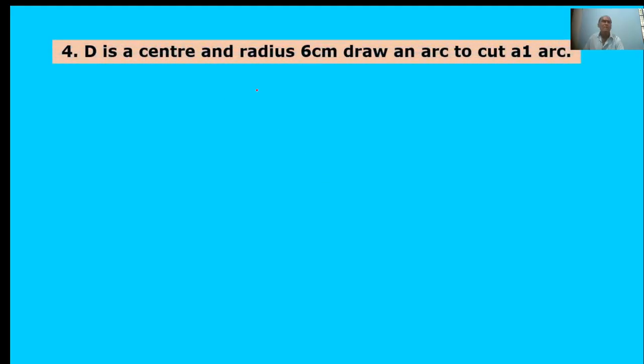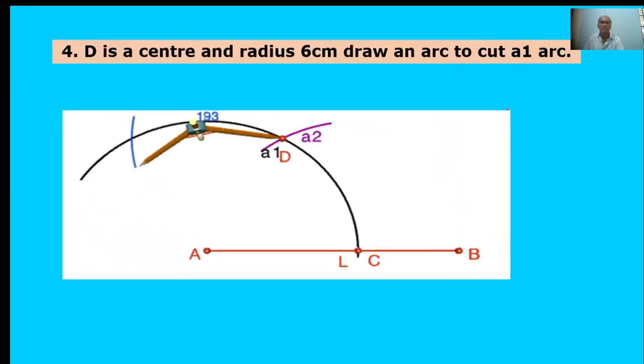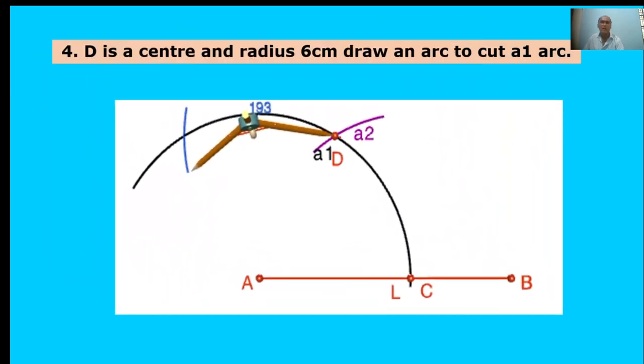D is center and radius 6 centimeters, draw an arc to cut the A1 arc. Same process. Here, point D. D is the center point. Radius is 6 centimeters. It draws an arc cutting the previous arc at A1. This is point E.